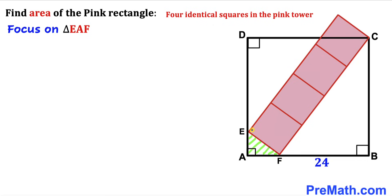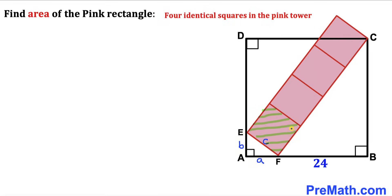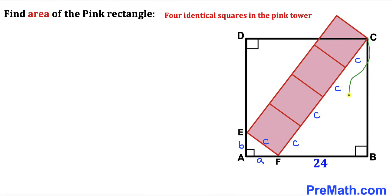Let's focus on right triangle EAF and label its side lengths. I'm going to call this side length lowercase a, this side length lowercase b, and the longest side c. Since we are dealing with identical squares, all their side lengths are going to be c as well. The side length FC is therefore c + c + c + c, which gives us 4c.